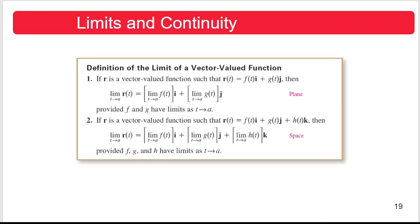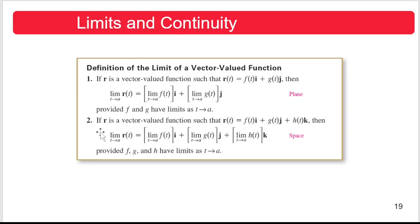By definition, the limit of a vector-valued function is defined as follows. For two-dimensional space, if r is a vector-valued function such that r(t) = f(t)i + g(t)j, then the limit of r(t) as t approaches a is the limit of the first component f(t) as t approaches a times i, plus the limit of the second component g(t) as t approaches a times j. This limit exists provided that f and g have limits as t approaches a.